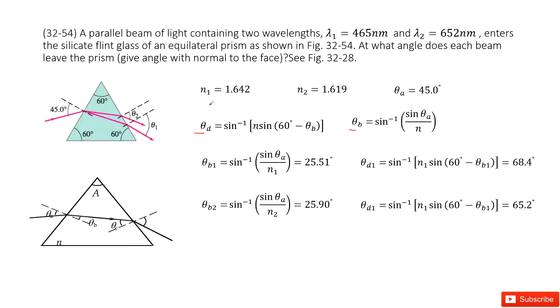In this case, in the first case, n1 is 1.642. So in this case, theta b1 is there. We input all the given quantities, get it there. And input sine theta b1 inside, we get sine theta d1.